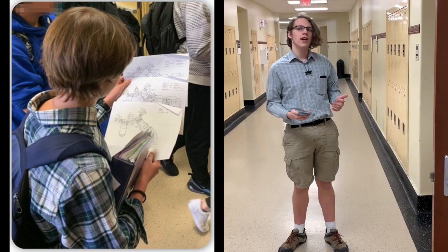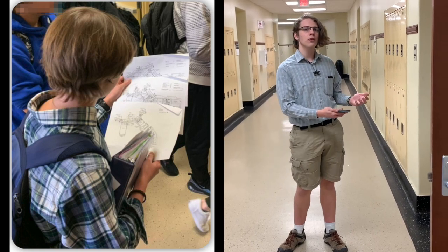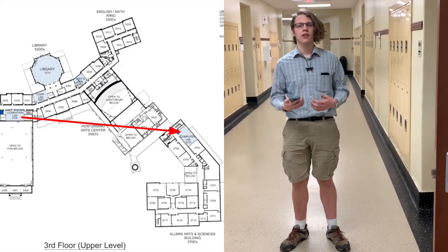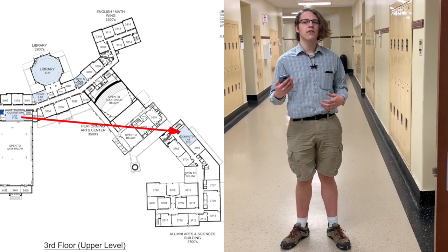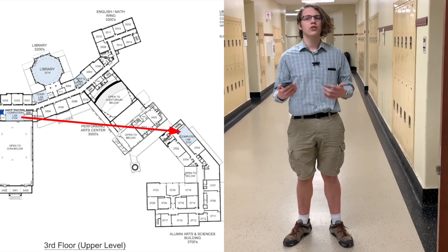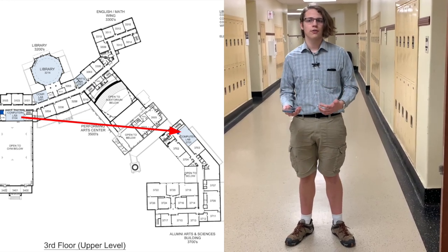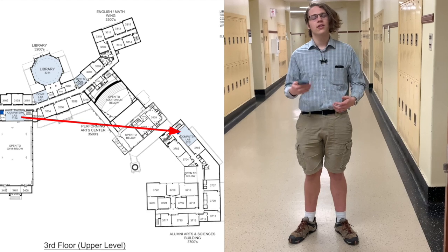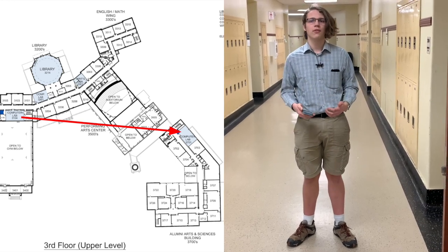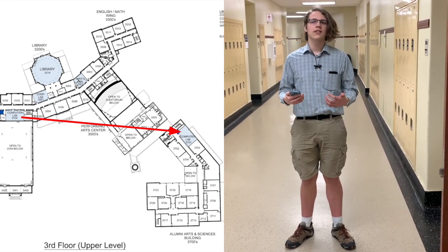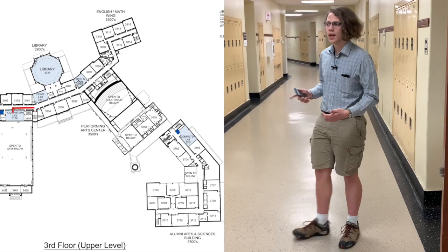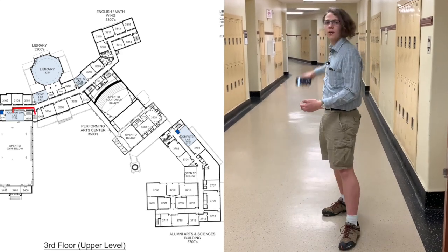For example, right now we're at room 3104, the computer lab. I'd like to get to the engineering lab, which is 3701. It might look like I could just walk across the third floor, but in all actuality, these two sections aren't connected on this level. Instead, we need to turn right out of the computer lab, and then right at the end of this hallway.